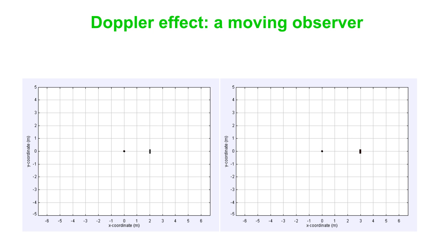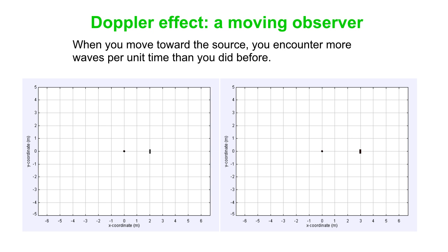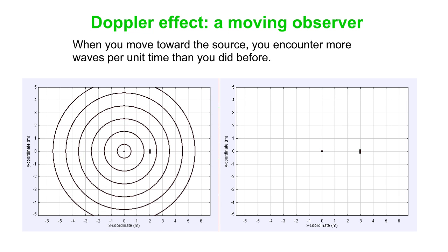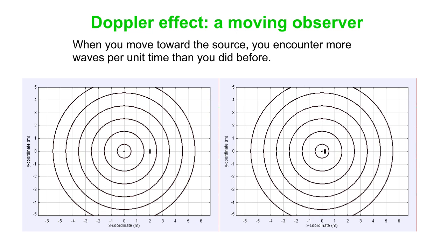Okay, so now we'll just start with what happens with a moving observer. So on the left, again, we just see, just for reference, the original pattern where the source and the observer are at rest. And on the right, we see the observer moving toward that source. And if you're that observer, you do indeed encounter more waves per unit time than you did before. You encounter them at a higher frequency. And this is because, in effect, the motion of the observer changes the wave speed, the wave speed with respect to the observer we're talking about.